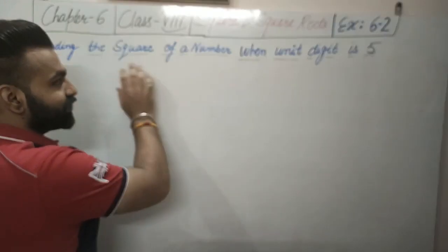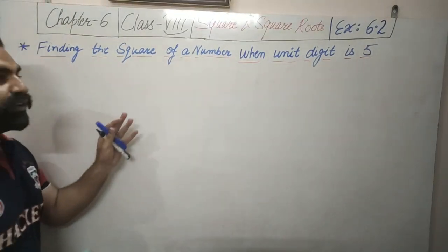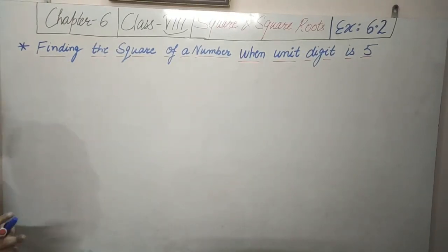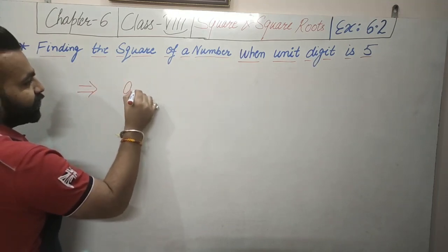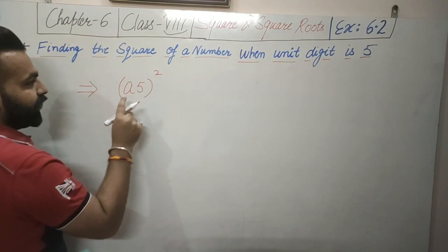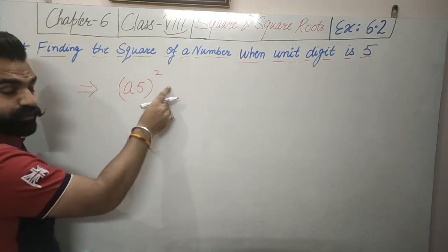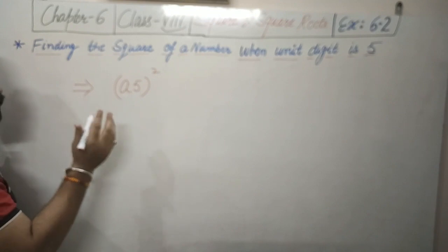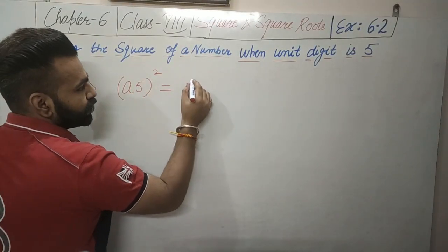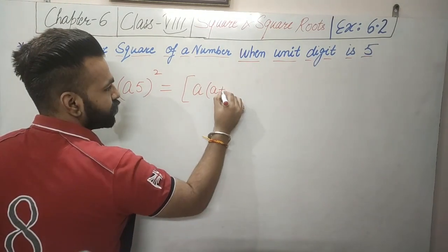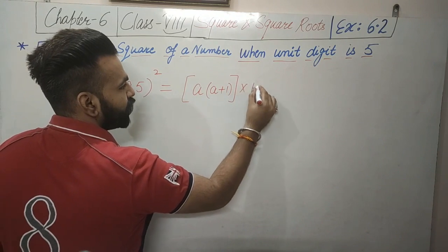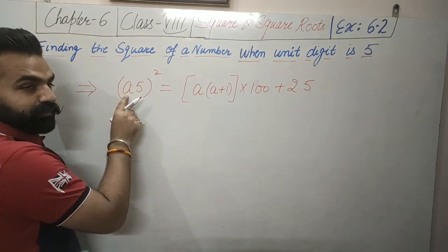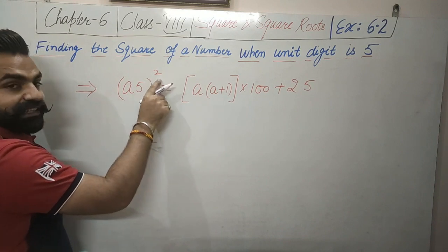The next topic is finding the square of a number when the unit digit is 5. Whenever the unit digit is 5 and we have to find the square, it is very simple by using a formula: a5 squared. Here a can be any number — if we want to calculate 15 squared, then a is 1; if we want to calculate 25 squared, then a is 2. Here a is some number from 1 to 9.